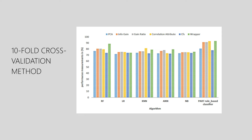Based on the results, algorithms compared include Random Forest (RF), Linear Regression (LR), KNN (k-nearest neighbors), ANN (approximate nearest neighbors), and a naive-based and particle-based classifier (Wrapper). For every algorithm class, five different correlation attributes are used as classifiers. For the PART-based rule classifier, the most accurate and precise results were obtained compared to any other classifiers. Previously, random forest techniques were commonly used due to large datasets, but the PART-based solution proposed by this paper is more efficient.